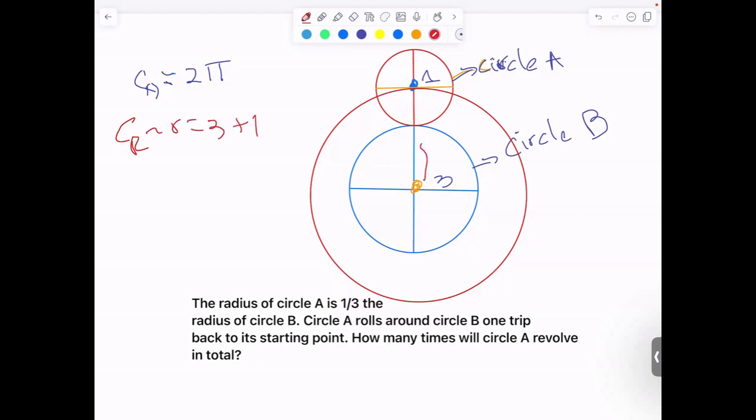I mean, 3 here plus 1 here, it's going to be 4. And the circumference of the rotation circle is going to be 8π because it's 2πr and the radius is 4.